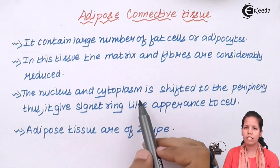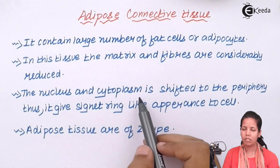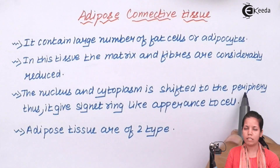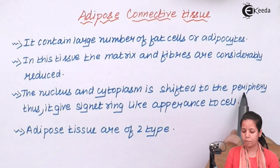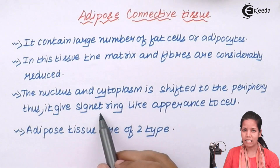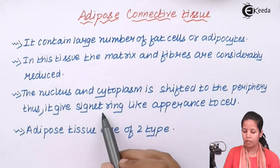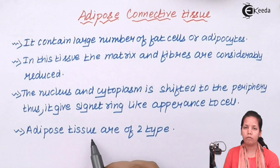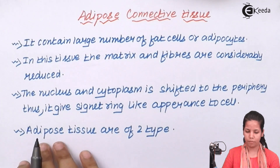The nucleus as well as the ground substance, which is the cytoplasm, is always shifted to the periphery — you can say at the corners. Thus, it gives a signet ring appearance to the cell. Adipose tissue could be of two different types depending upon whether you are an adult or a child.